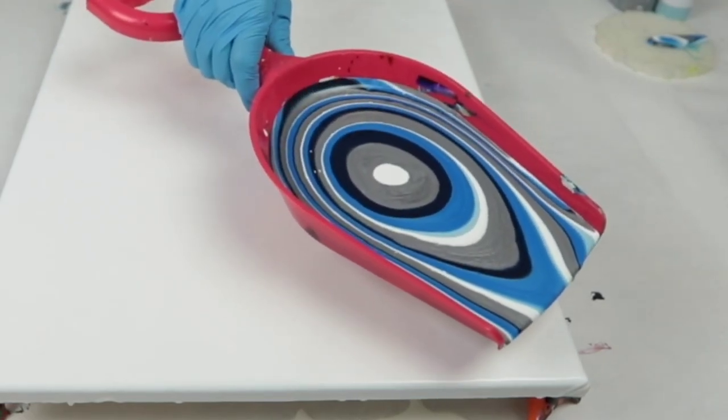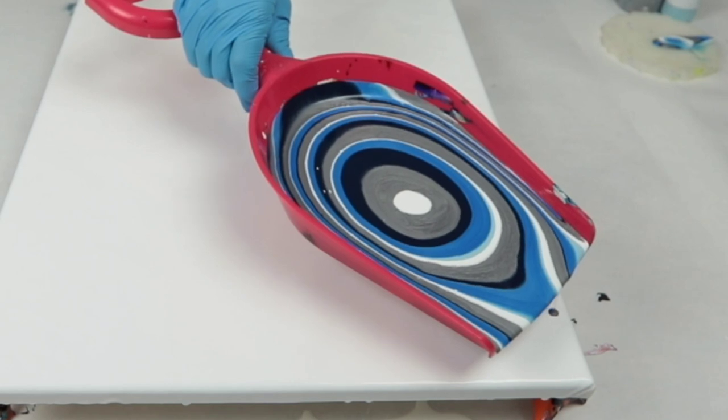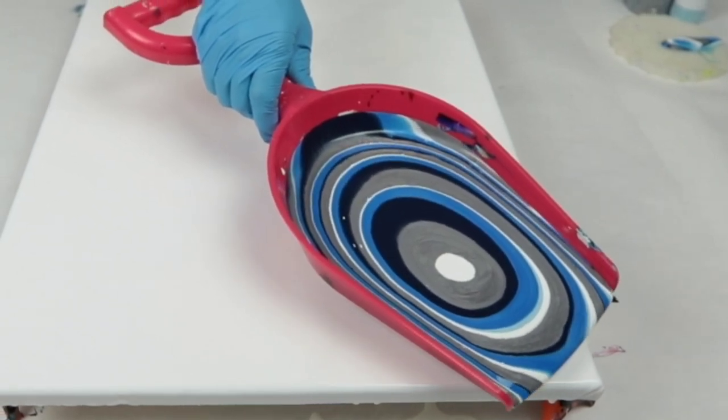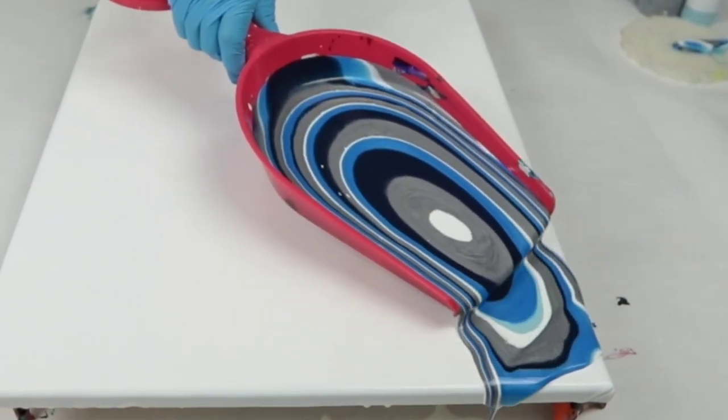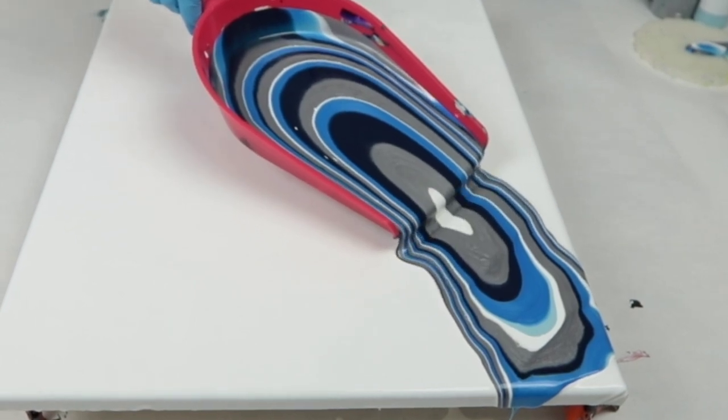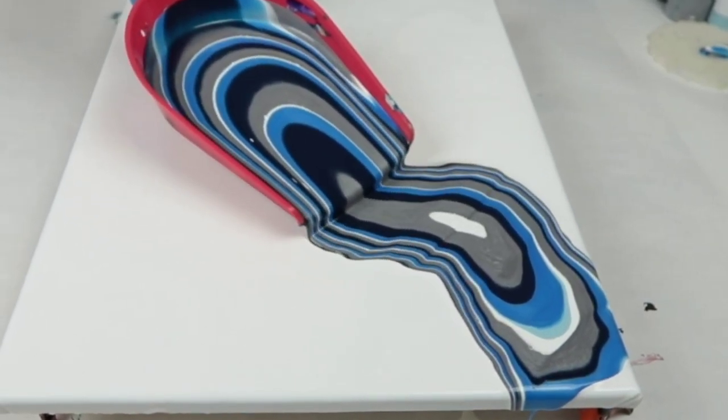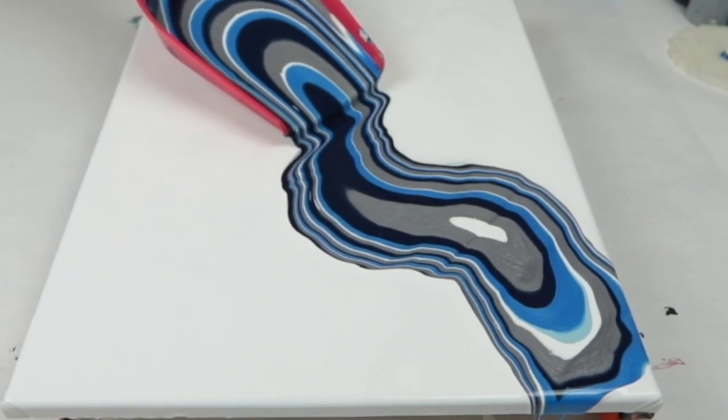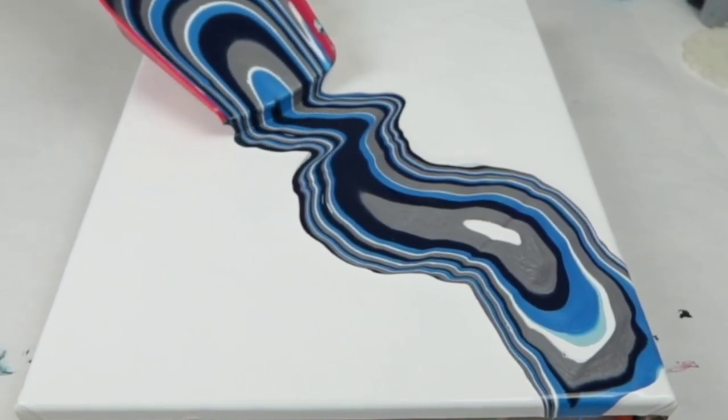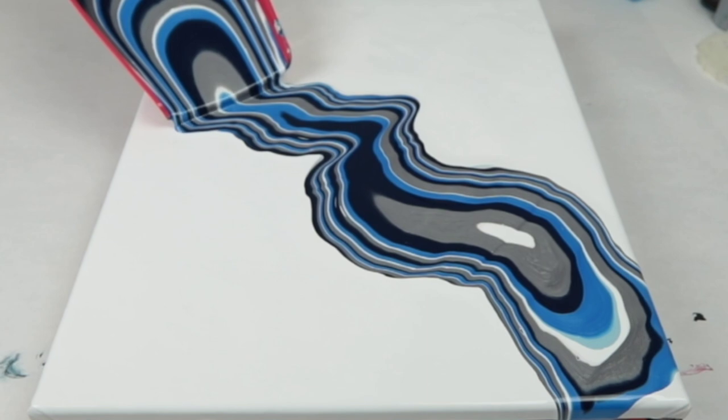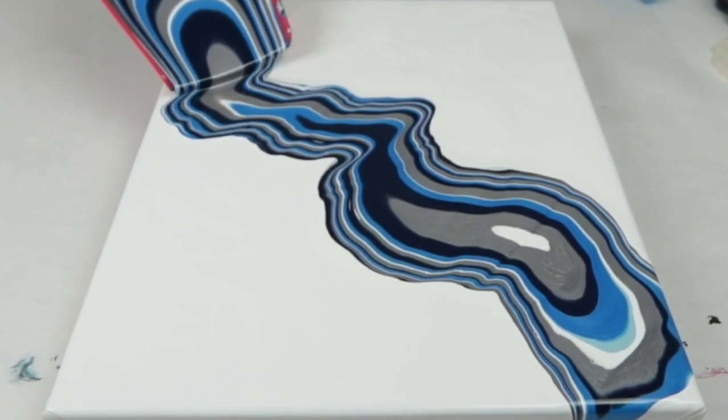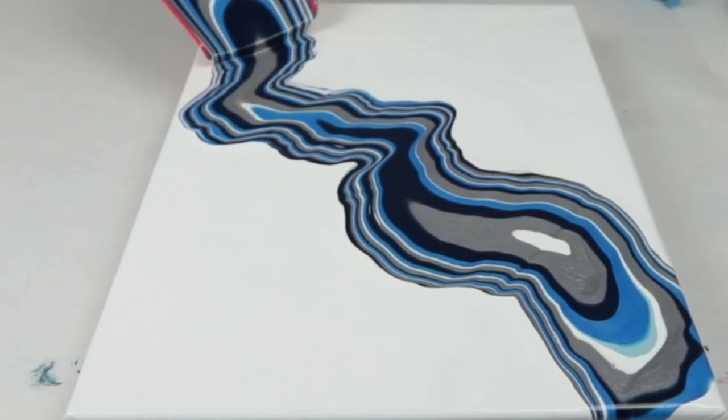And then once you do so, go in with your shovel or your dustpan. Now on this, I thought it'd be awesome to do the design from corner to corner. So I'm going diagonally. And this part does take a little bit of practice to not let out too much paint that you run out of paint before you get to the end and not let out too little paint that you have such a thin design that you're not really happy with.